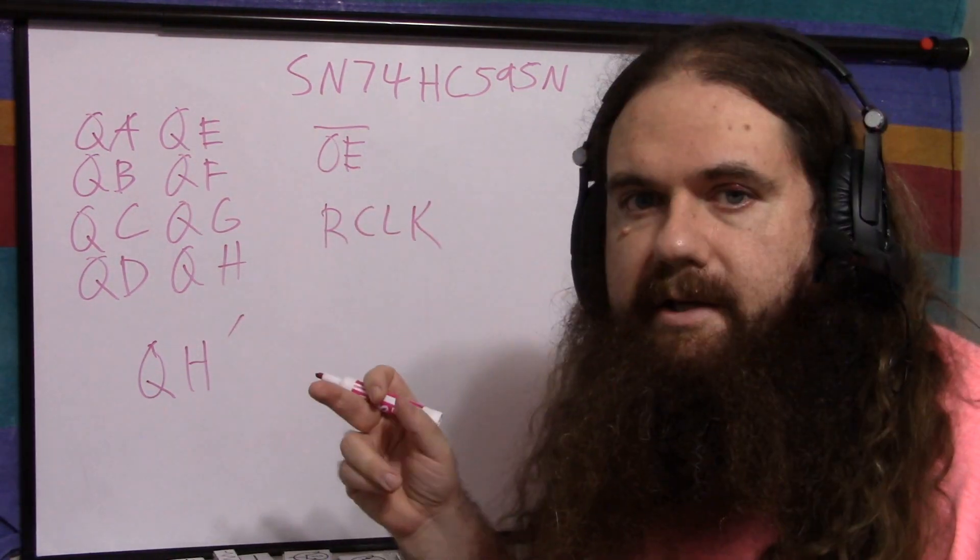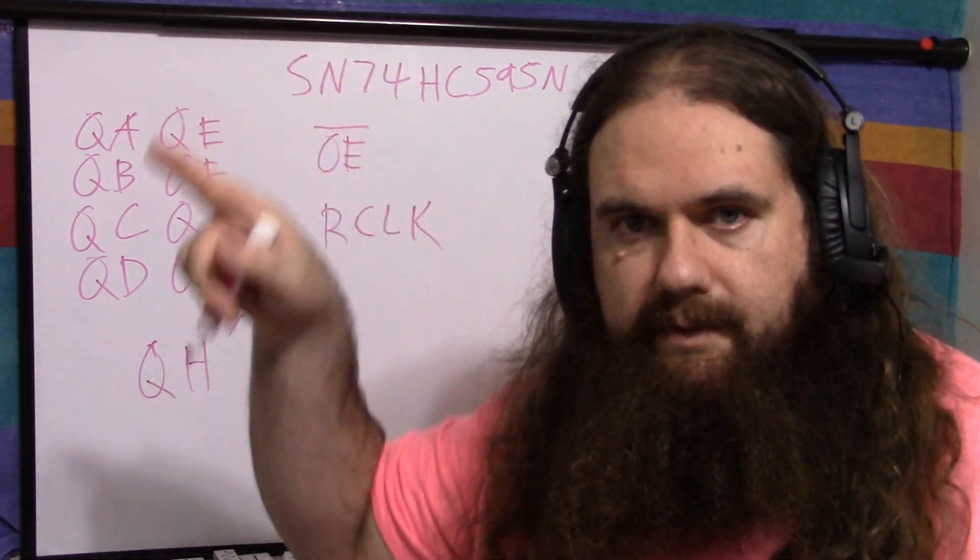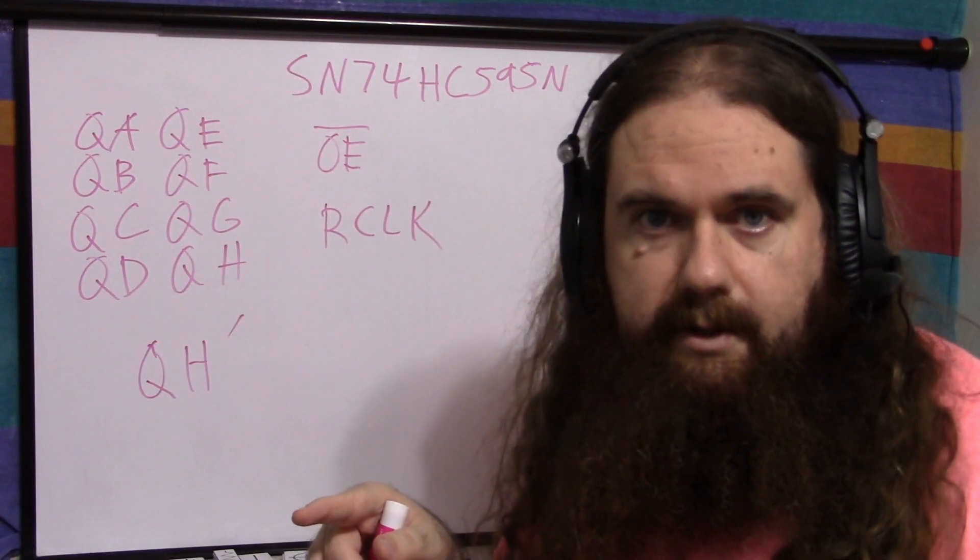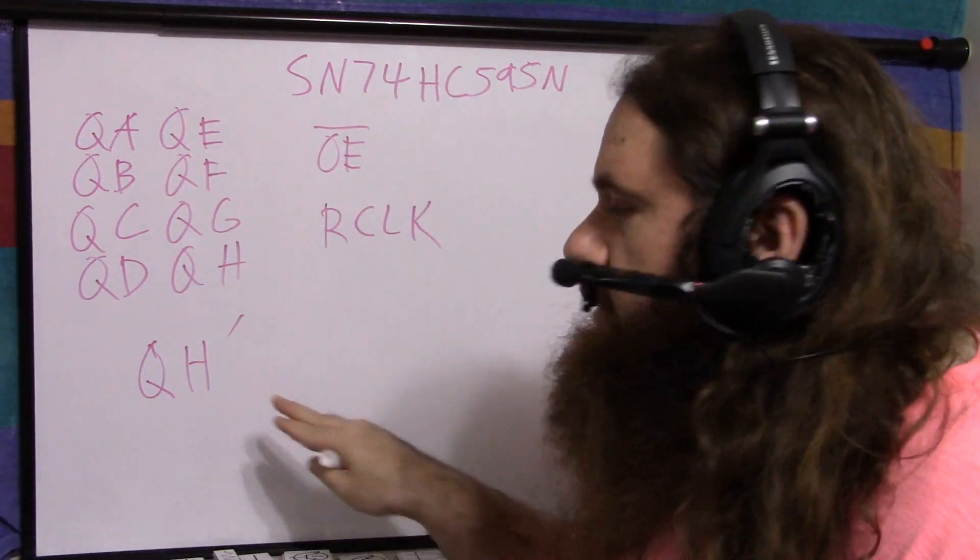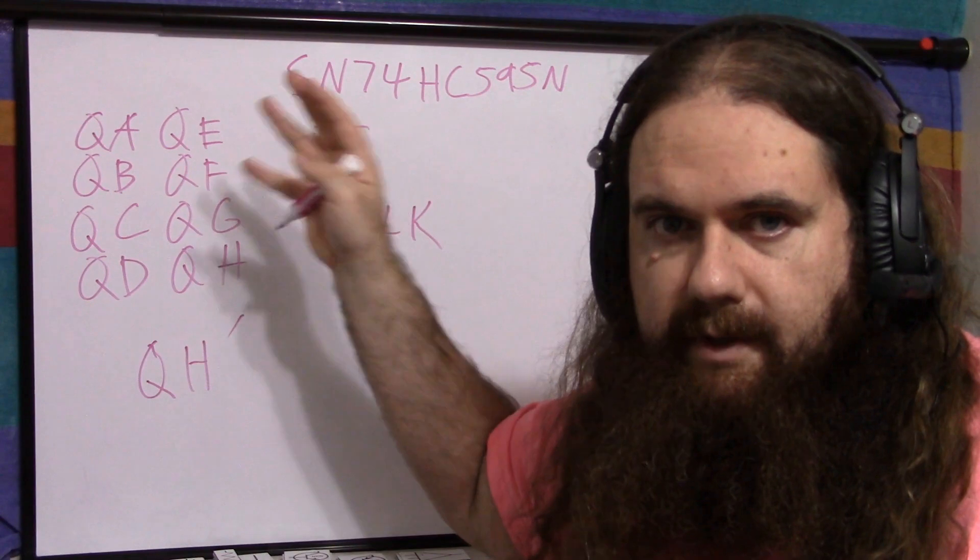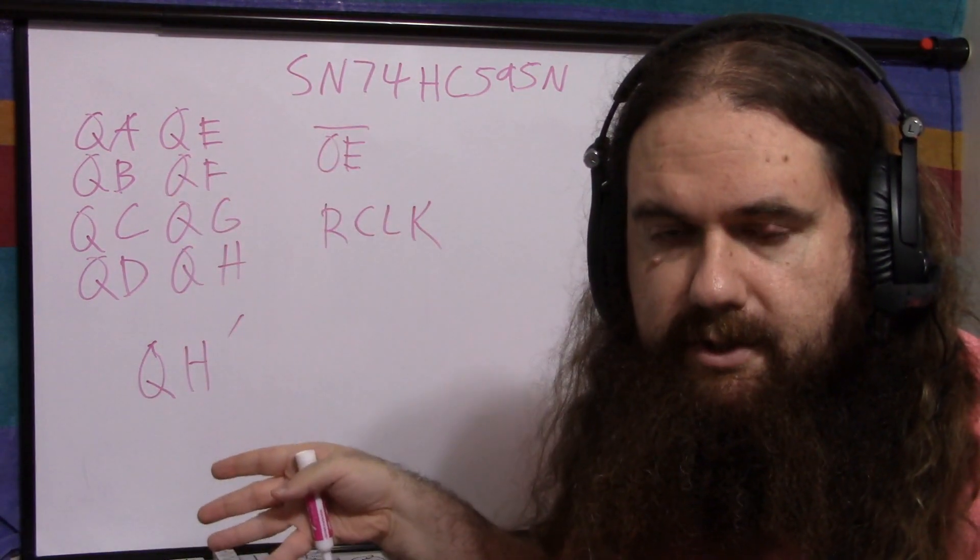The idea for this is you use it if you have the shift register circular. You could hook this back into the first bit and circulate the data, or it's for chaining. So if you have 16 bits, if you have two of these chips,